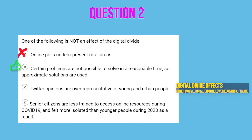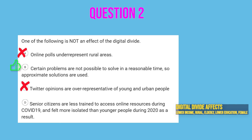Let's look at the other options. Option C: Twitter opinions are overrepresentative of young and urban people. With the digital divide, rural and elderly people are underrepresented, so the flip side is that younger and urban people are overrepresented — this is true and is an effect of the digital divide. Option D: senior citizens are less trained to access online resources during COVID-19 and felt more isolated than young people during 2020 as a result. Elderly people are affected by the digital divide as they have less access to computing, so this is true and not what we're looking for.